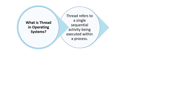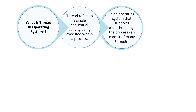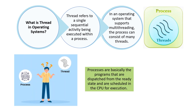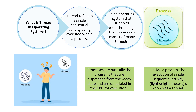A thread refers to a single sequential activity being executed within a process. In an operating system that supports multi-threading, a process can consist of many threads. Processes are basically programs that are dispatched from the ready queue and scheduled in the CPU for execution. Inside a process, the execution of a single sequential activity — which we can call a lightweight process — is known as a thread.